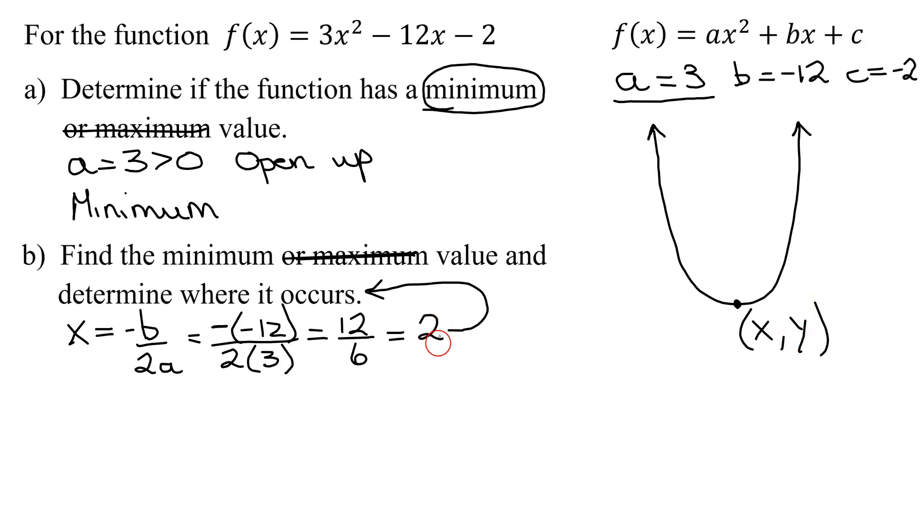And we find that by plugging 2 in our function definition. So all I have to do is find f of 2. So I'm going to get 3 times x squared. So it's 3 times 2 squared minus 12 times 2 minus 2. So we do exponents first. So 2 squared is 4. So I get 3 times 4 minus 12 times 2 is 24 minus 2. 3 times 4 is 12 minus 24 minus 2.